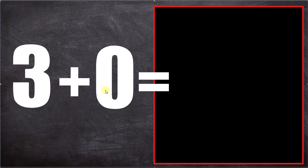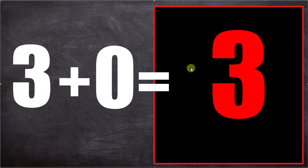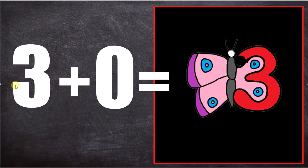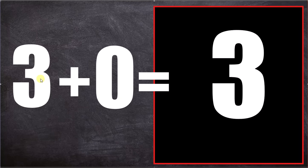Three plus zero equals three. Three butterflies. Three plus zero equals three. Yay!